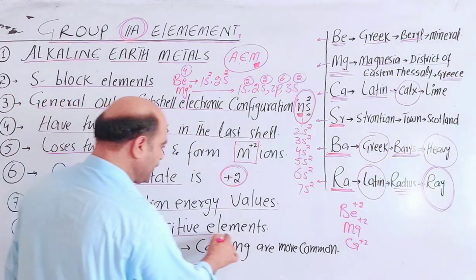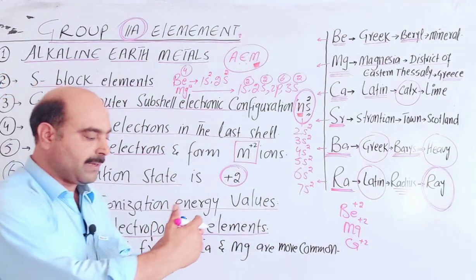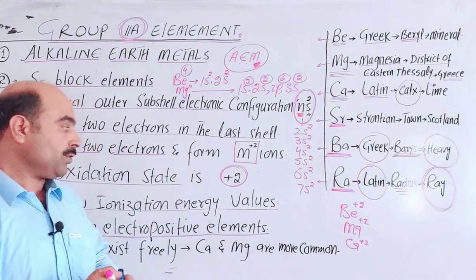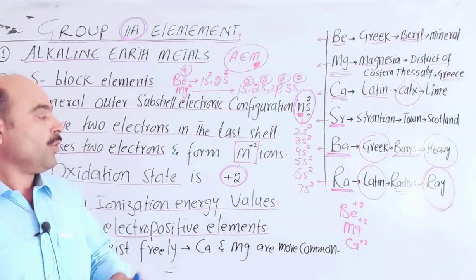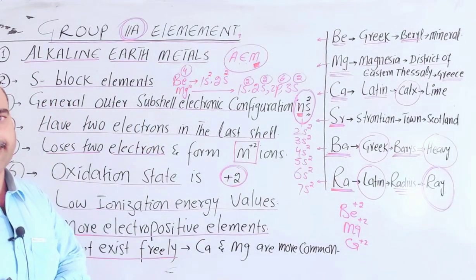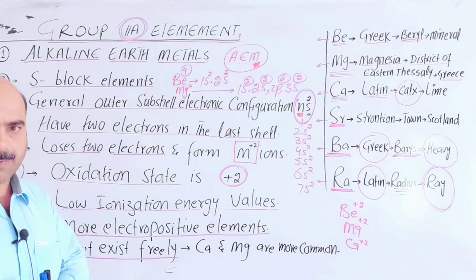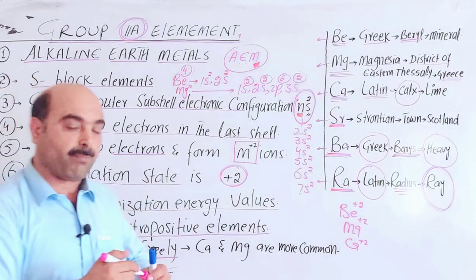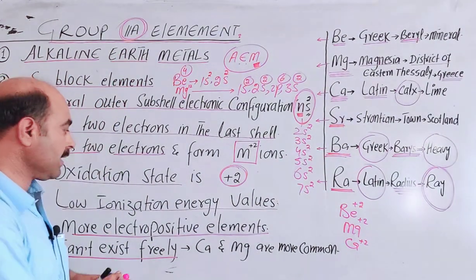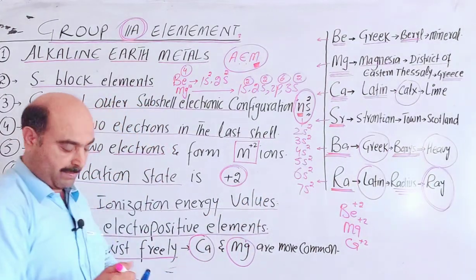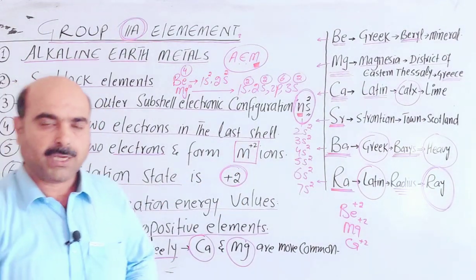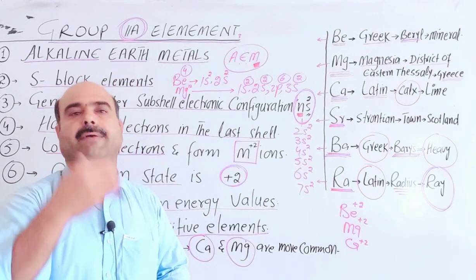These are more electropositive elements compared to alkali metals, though less than alkali metals because alkali metals are larger in size. They are electropositive elements. They can't exist freely in elemental form or native state because they are more reactive due to low ionization energy. Most of their compounds are present in the earth crust. Among alkaline earth metals, calcium and magnesium are more common.